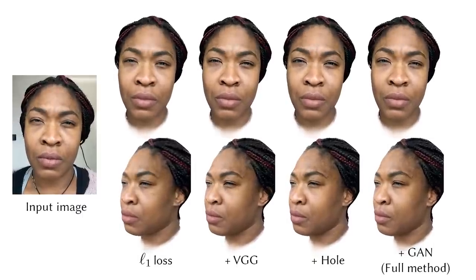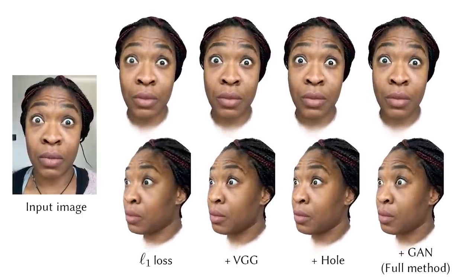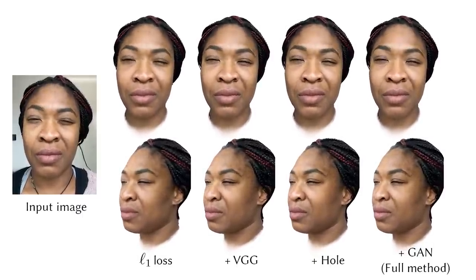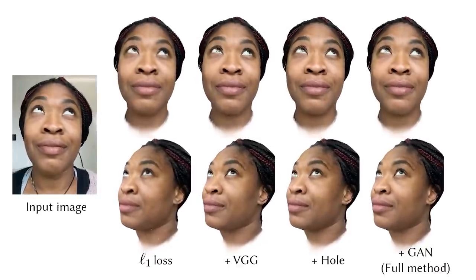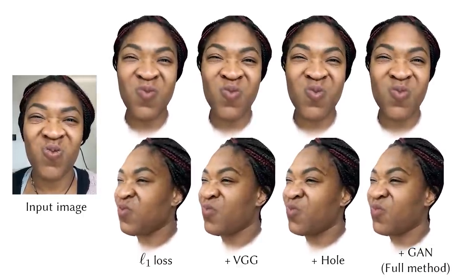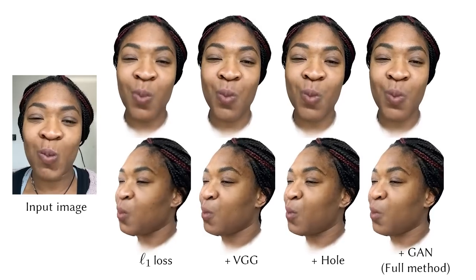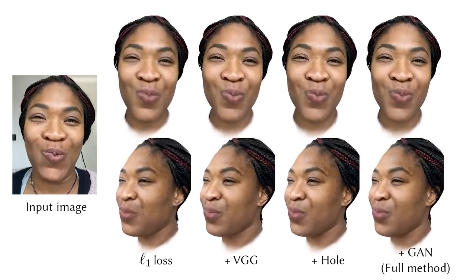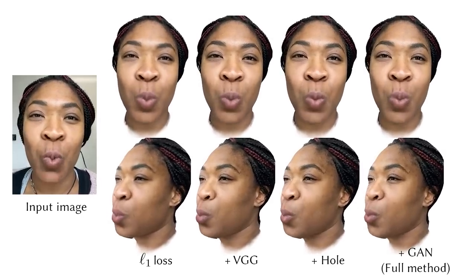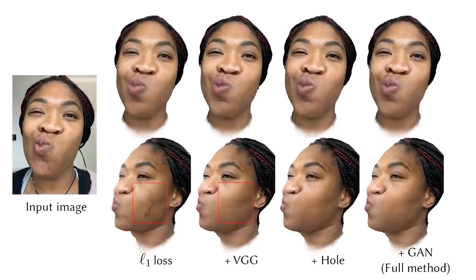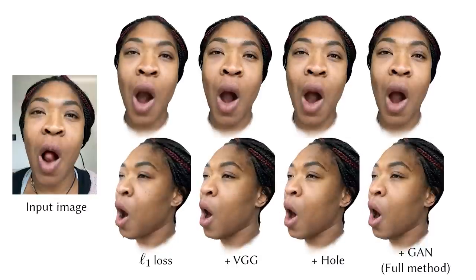Here we evaluate the loss terms used when refining the personalized avatar model. If we only use L1 norm reconstruction loss, the results are blurry. Adding a VGG loss enhances the sharpness of the results. We can observe whole artifacts in certain views stemming from volumetric rendering. Adding the whole loss helps resolve this problem. Adding GAN loss can further improve the visual quality.